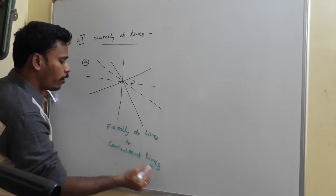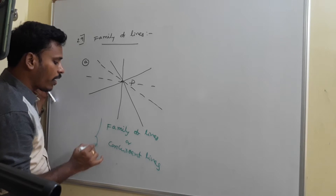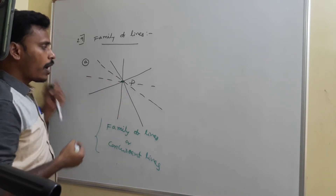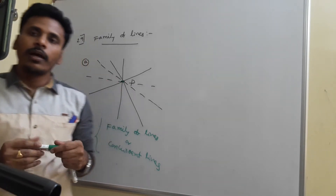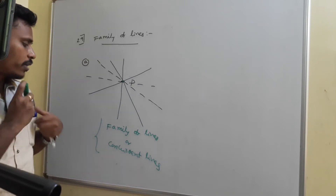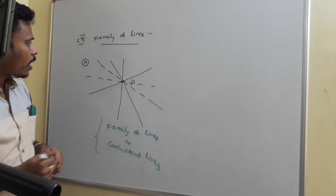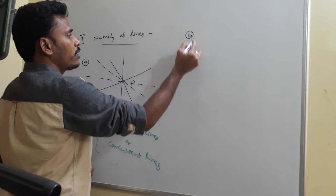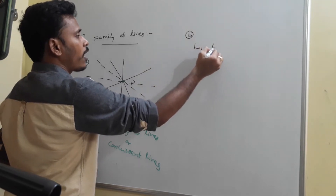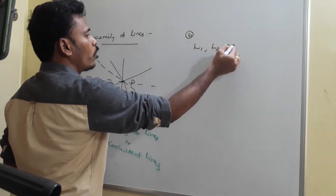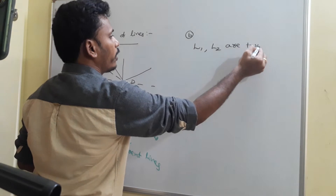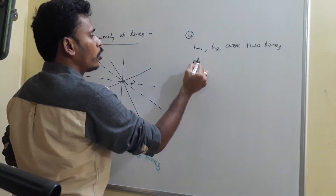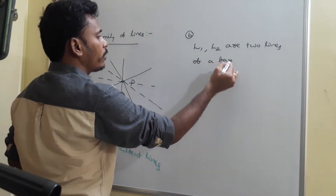Concurrent lines or family of lines are the lines which are passing through the same common point, and that point is called the point of concurrency. Now, if L1 and L2 are two lines of a family, we need to discuss what we can say about another line of the same family.